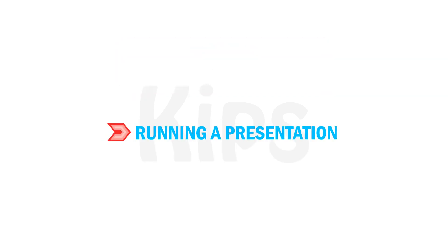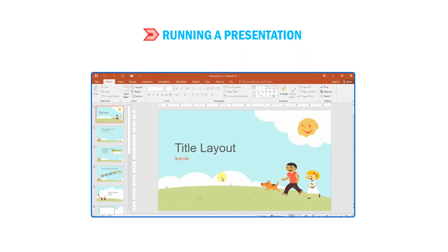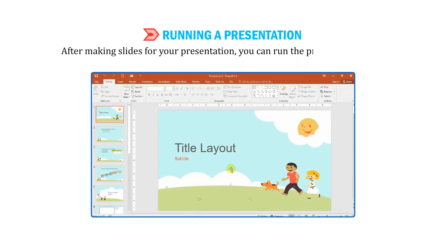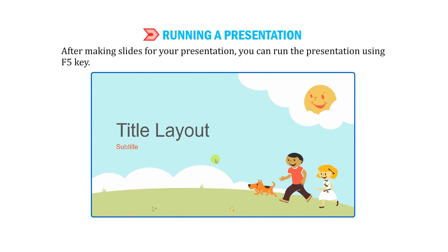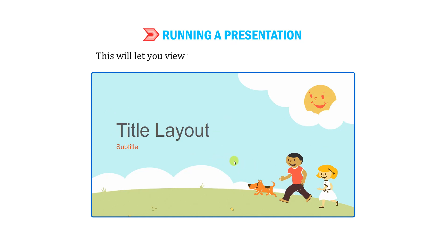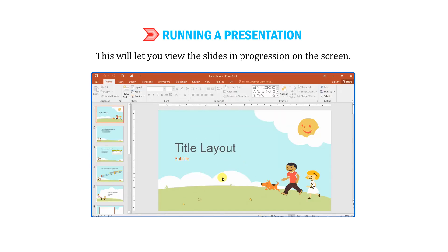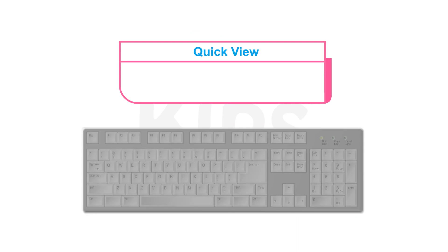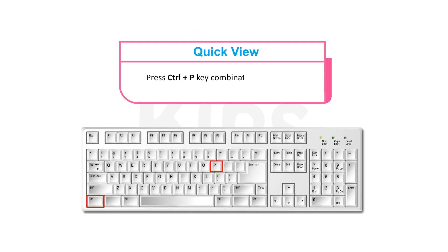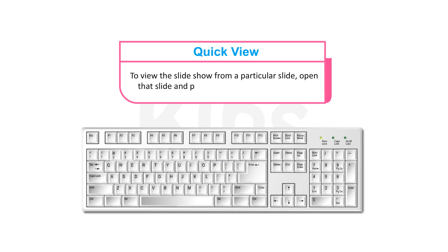Let us learn how to run a presentation. After making slides for your presentation, you can run the presentation using the F5 key. This will let you view the slides in progression on the screen. Press Ctrl plus P key combination to print the slides. To view the slideshow from a particular slide, open that slide and press Shift plus F5 key combination.